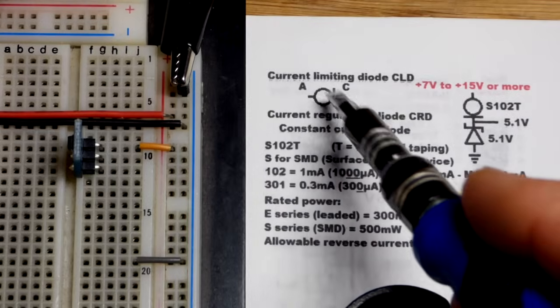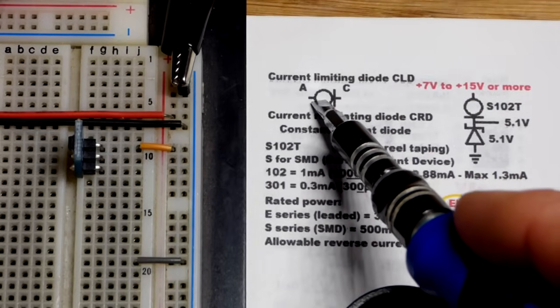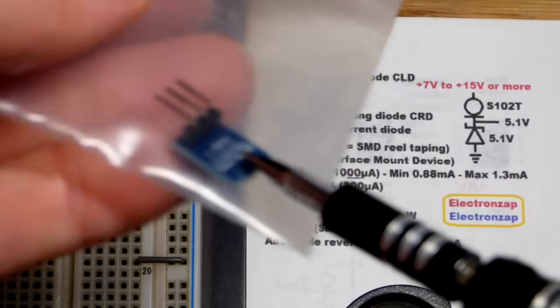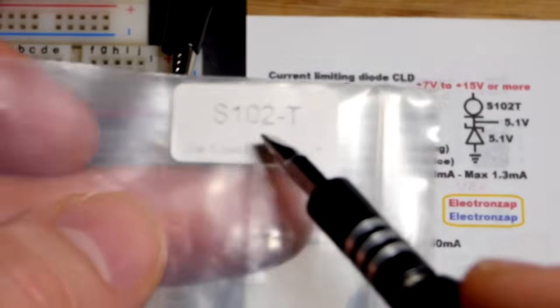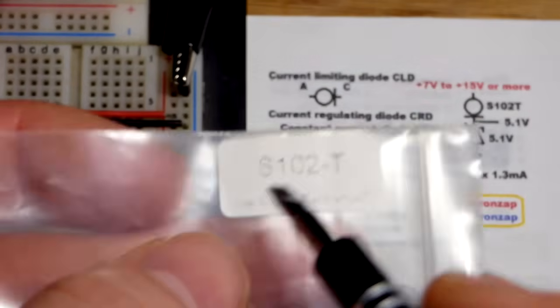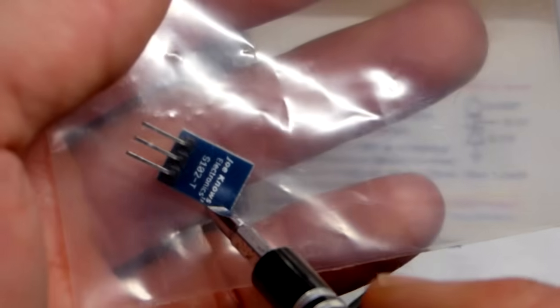So now in this video we're going to look at the current limiting diode. I only have two of them. This one doesn't seem to be as close to one milliamp as that one, so I'm going to use the one that's doing better. This one looks like it's at 0.8 milliamps of current, that one's 0.9 something, probably 0.97, almost a milliamp of current.